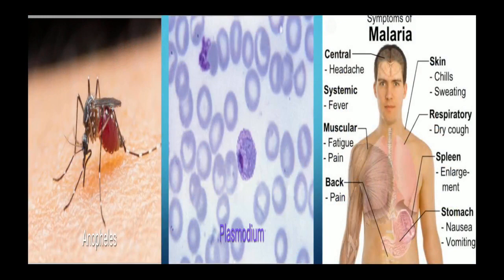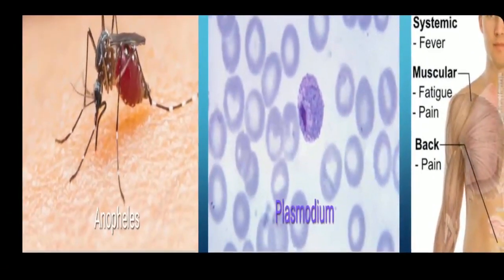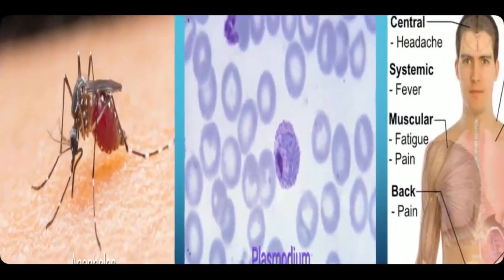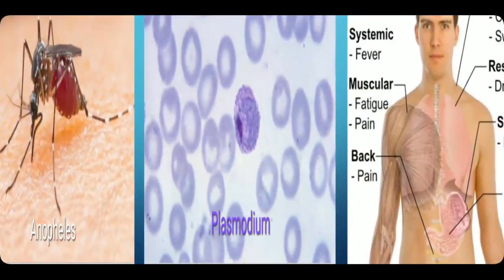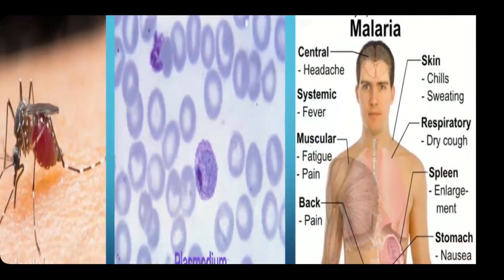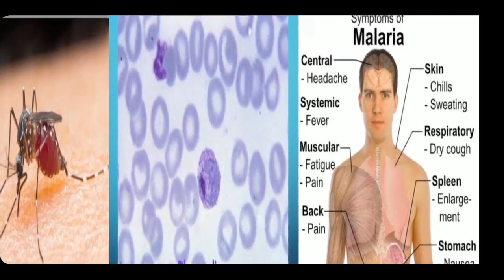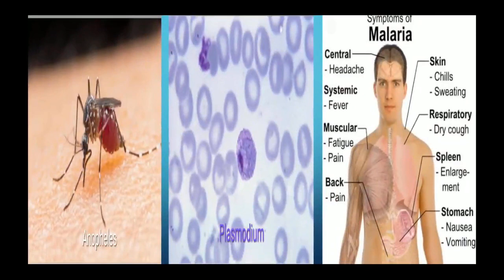The next disease is malaria. It is caused by the bite of the female Anopheles mosquito, which carries the pathogen plasmodium and transmits it to the human body. Symptoms include chills, high fever with sweating, muscle pain, nausea, back pain, systemic fever, and severe headache. Prevention includes using insect repellent to prevent mosquito bites, avoiding areas where mosquitoes are present, and infected persons remaining inside a mosquito net.